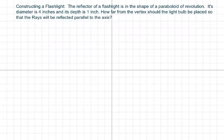Hi everyone, we're going to construct a flashlight. This problem is basically the same as the prior two problems. The reflector is in the shape of a paraboloid of revolution. Its diameter is four inches and its depth is one inch, so I'm going to go out four here.